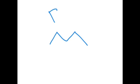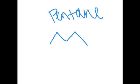Zigzags are like mountains. What does this zigzag or mountain mean? This is the skeletal structure for pentane, and pentane's chemical formula is C5H12.